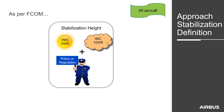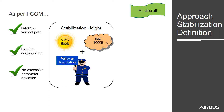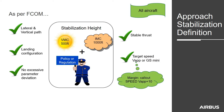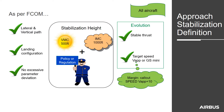Of course, this is in accordance with the policy and regulation of your airline. To have this later stabilisation, you have to be on the lateral and vertical path of the approach, in landing configuration, with no excessive parameter deviation, stable in thrust, and at the target speed — VPP or ground speed mini. Remember that we have a call-out when the speed exceeds VPP plus 10. The evolution was on the thrust and the target speed.